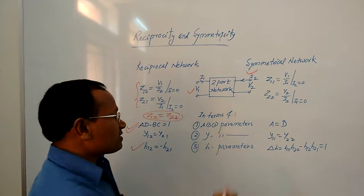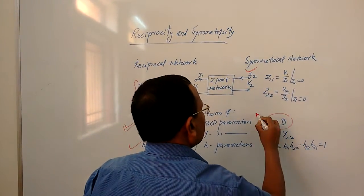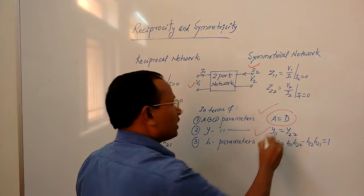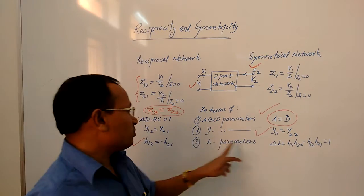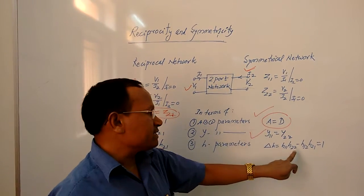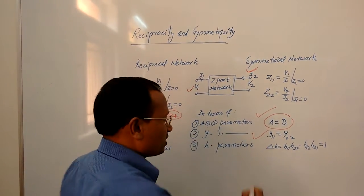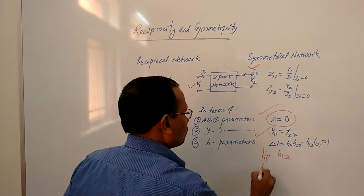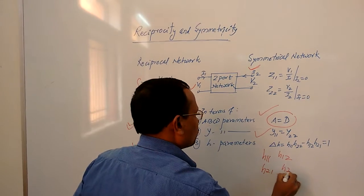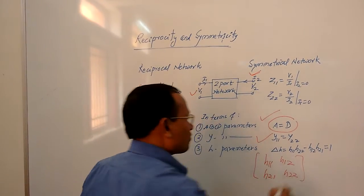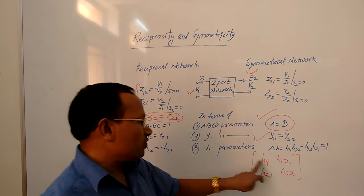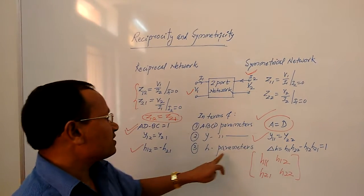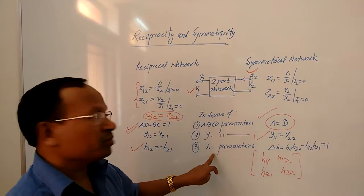In terms of other two-port parameters: in ABCD parameters, the condition for symmetricity is A equal to D; in Y parameters, Y11 equal to Y22; in H parameters, delta H equal to 1, where delta H is the determinant of the H parameter matrix — that is H11·H22 minus H12·H21 equal to 1.